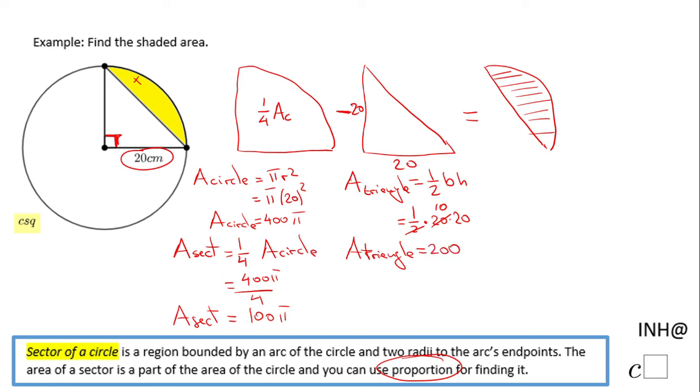Now the last thing we have to do is this subtraction: area of the sector minus area of the triangle. That will be 100π - 200, and this is the answer for this problem.